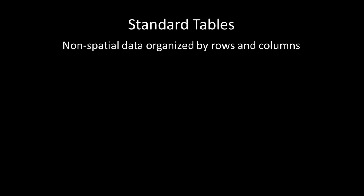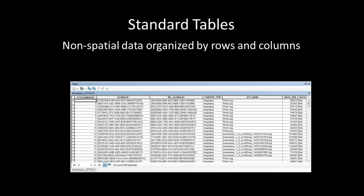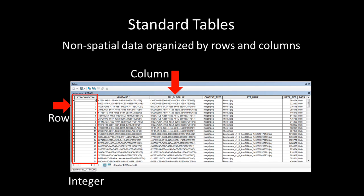Standard tables, in the context of a file geodatabase, are a collection of non-spatial observations organized by rows and columns. Each row in a table represents one data observation, and each row has the same columns. An important point is that each column has a data type — for example, a column might be a numerical data type called an integer, while another column might be a text string data type.